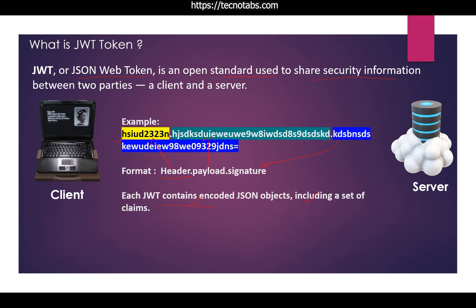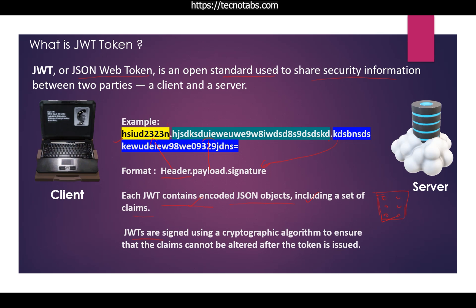Each JWT Token contains encoded JSON objects including a set of claims. If you decode it, you will find each token has a JSON format with objects stored as key-value pairs. JWT tokens are signed using a cryptographic algorithm to ensure claims cannot be altered after the token is issued. Every JWT Token is unique and securely signed so that nobody can alter it.